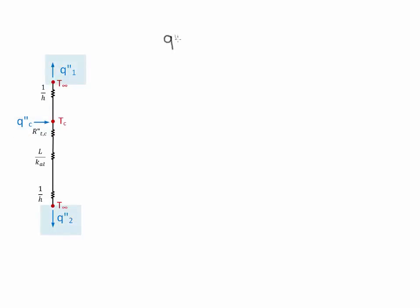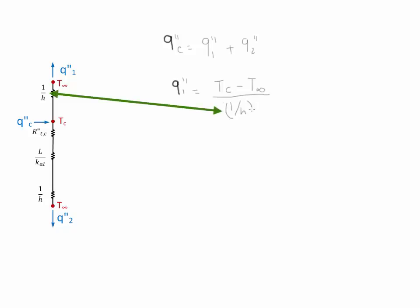Notice that we have the flux of the chip going in and fluxes 1 and 2 leaving the system. Therefore, the flux of the chip is equal to flux 1 plus flux 2. Flux 1 is due to convection in the upper part of the chip. Therefore, Q1 is equal to the difference in temperature across the convection resistance, which is Tc minus T-infinity divided by the convection resistance 1 over h. Q2 is the summation of resistances due to convection, conduction, and the epoxy resistance.